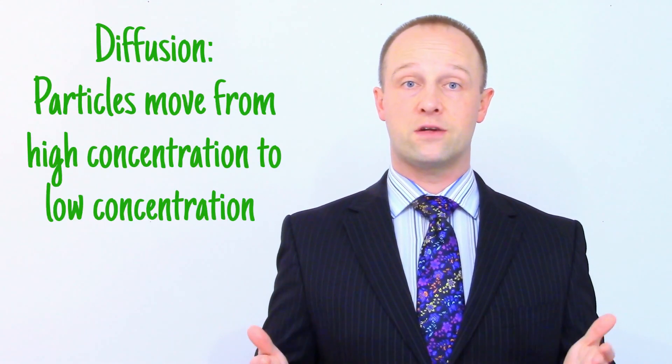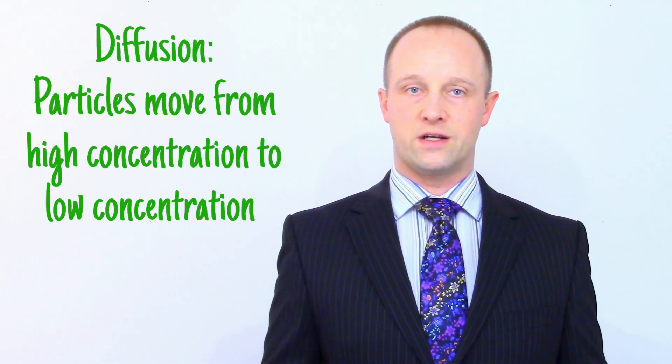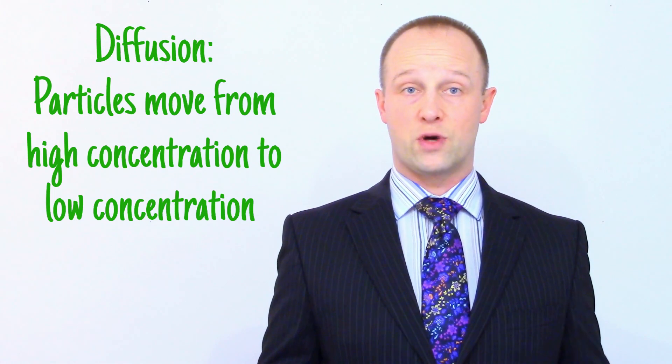It's easiest to get your head around active transport if we first remember the other key ways substances move around the bodies of living organisms. First up, there's diffusion, which I cover in this video. Essentially, if you have particles of a substance in a fluid, those particles will steadily move from high concentration to low concentration, spreading out until the concentrations even out.